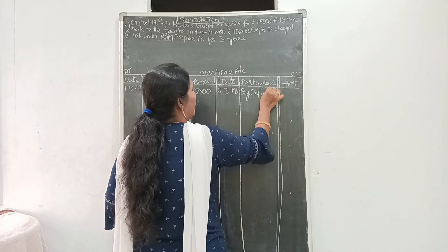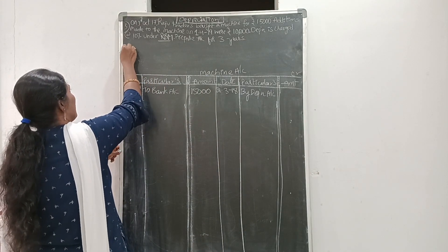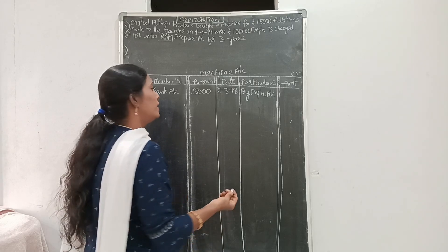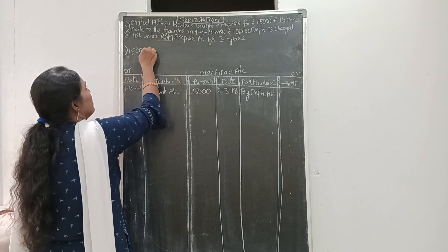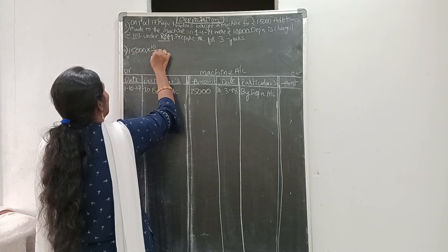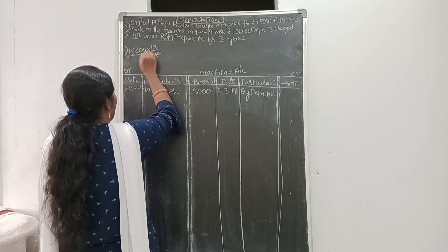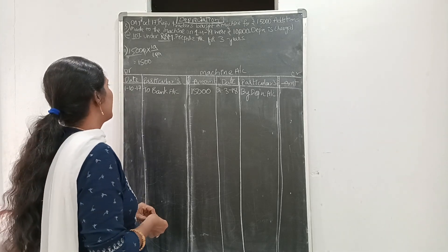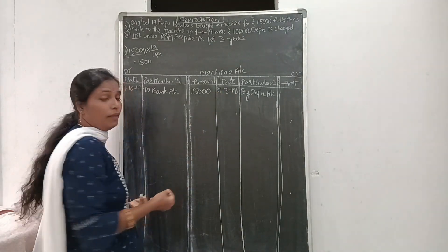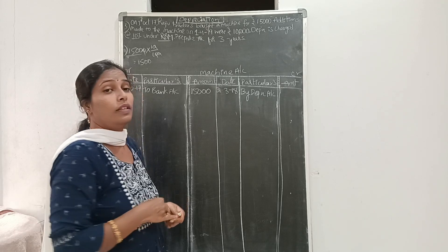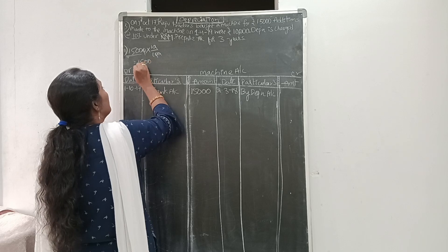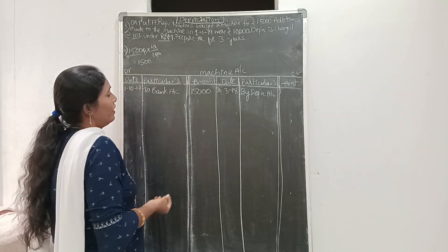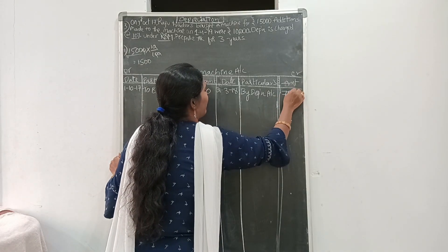Under the diminishing balance method, every year we need to calculate depreciation on the reducing balance. Cost of the machine is 15,000, rate of depreciation is 10%, so annual depreciation is 1,500. But the machine was purchased in the middle of the year — October to March — so count the months: October, November, December, January, February, March — that is 6 months. So 6-month depreciation is 1,500 divided by 2 = 750.